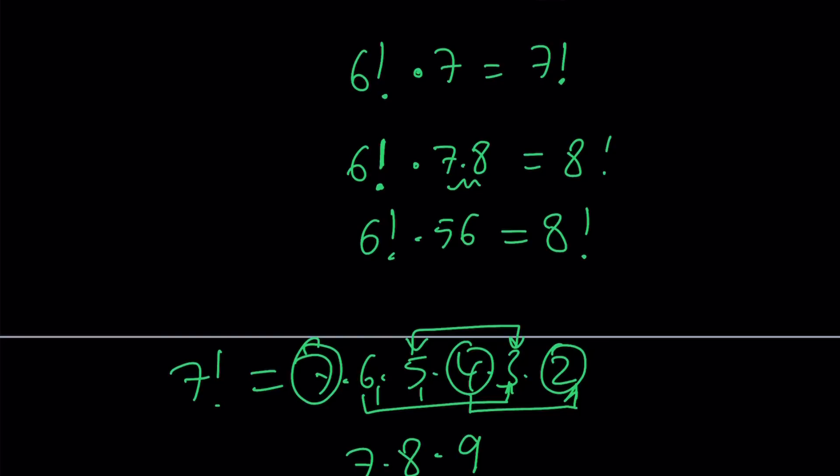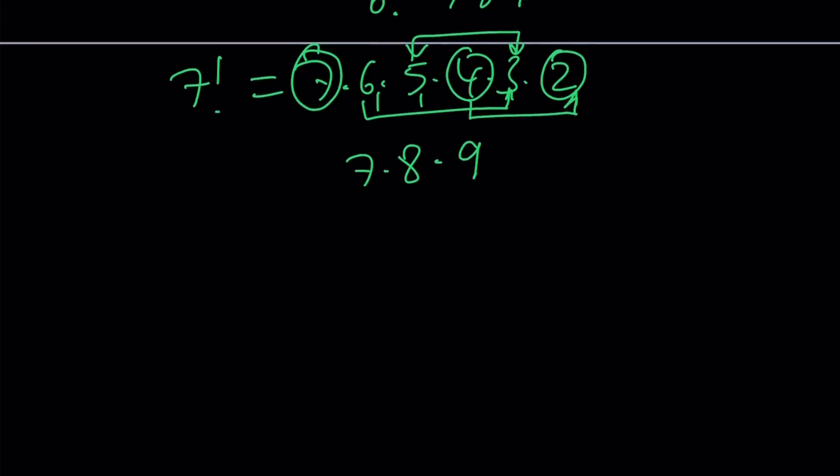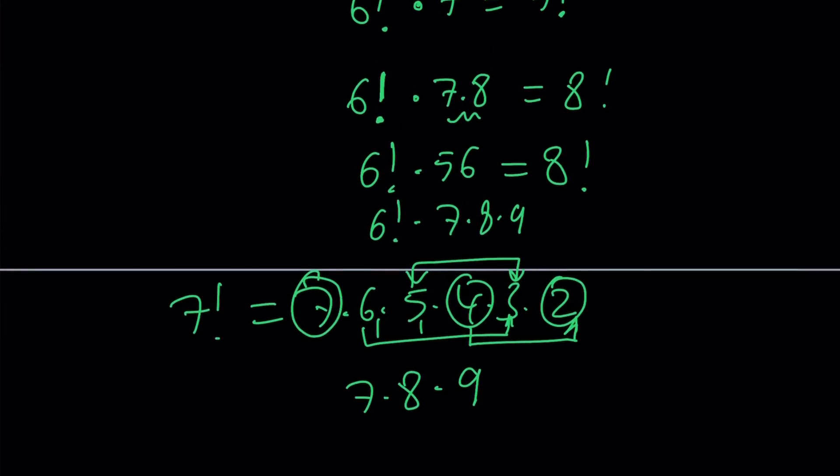Make sense? I mean, I don't have to go through all the cases. You can try 6 factorial times 7 times 8 times 9, 6 factorial times 7, 8, 9, 10, so on and so forth, right? So here's what I'm going to do instead. This doesn't work. We know that because 7 factorial cannot be broken down to give us what we need.